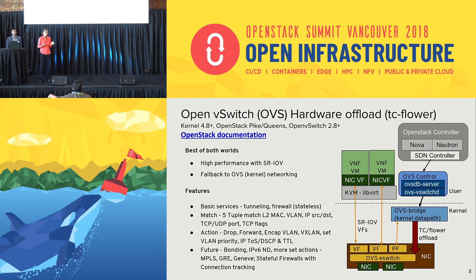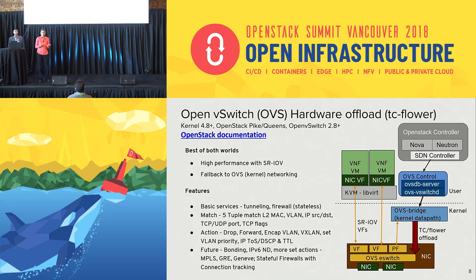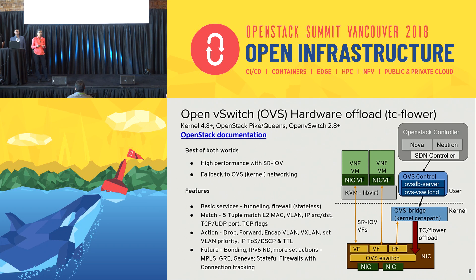This gives you the best of both worlds: high-performance flows offloaded straight via SRIOV to the NIC, with fallback to OVS for signaling and control traffic using kernel networking. Currently with OVS offload we have support for basic tunneling — VXLAN and VLAN — as well as stateless firewalls with match actions for input port, five-tuple matching, IP source, destination port, TCP flags, and ARP matching. Actions include drop, forward, encap/decap for VXLAN and VLAN, TCP, QoS, TOS, and DSCP. Future work includes bonding support offload, IPv6 neighbor discovery, encap for GRE, Geneve, MPLS, and stateful firewalls with connection tracking.